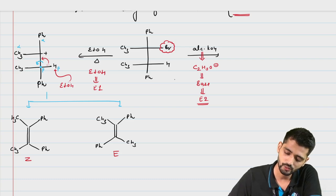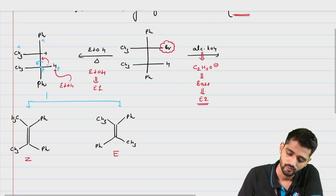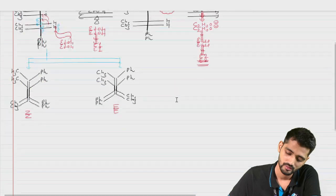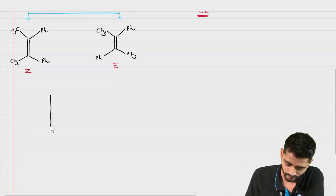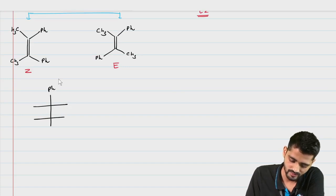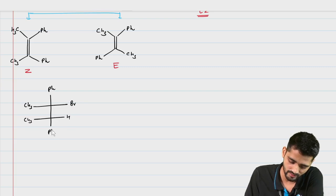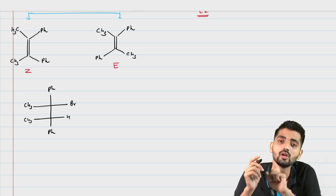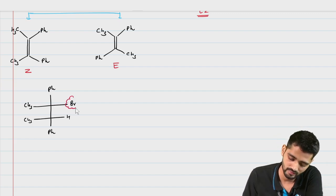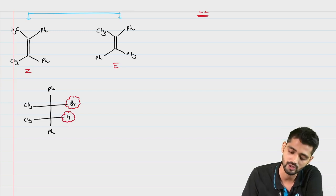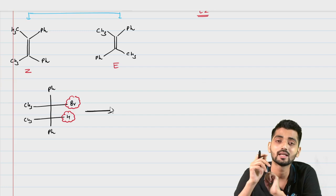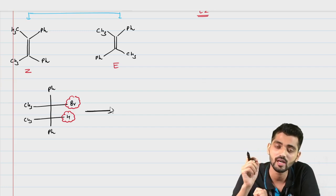Let's see how E2 gives only one isomeric form. In order to deal with E2 elimination, we need to convert the Fischer form into a wedge-dash form. If we have our reactant as CH3, leaving group, hydrogen, CH3, and phenyl, in order to have the E2 elimination we need Br (the leaving group) and the hydrogen both anti to each other. So to make our concept easy, we will convert this Fischer form into wedge-dash form.